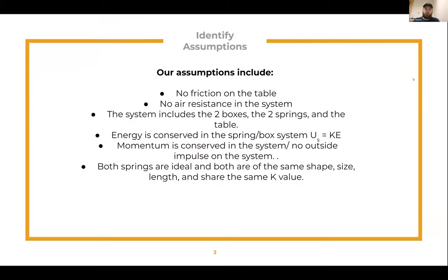We make a couple of assumptions: there is no friction between the blocks and the surface, and there is no air resistance in the system. The system consists of the two boxes, two springs, and the surface. Energy is conserved, momentum is conserved, and both springs are ideal — they have the same shape, length, size, and the same K value.